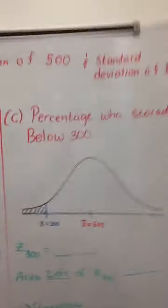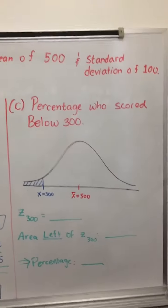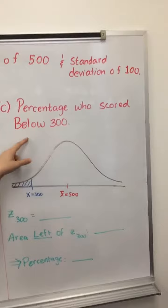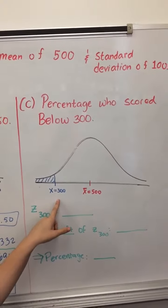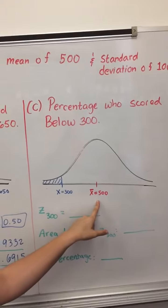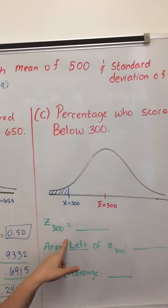And finally, in Part C, we're asked to find the percentage of people who scored below 300. We begin by noticing again that 300 is to the left of 500, the mean. And now we find the z-score for 300.